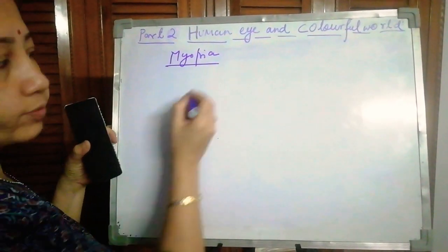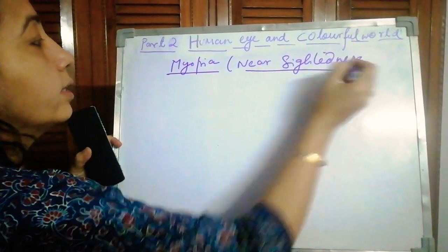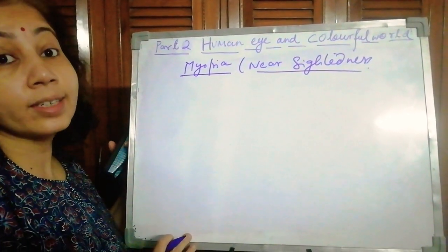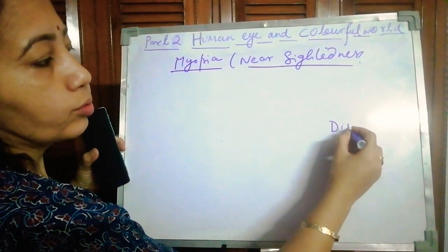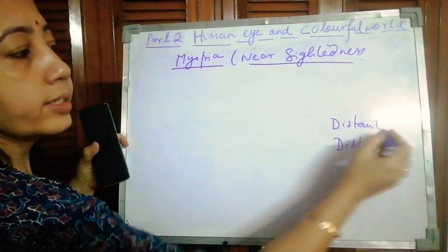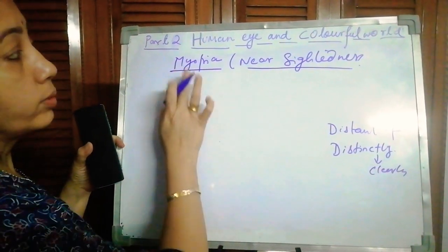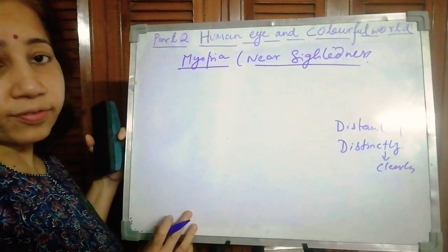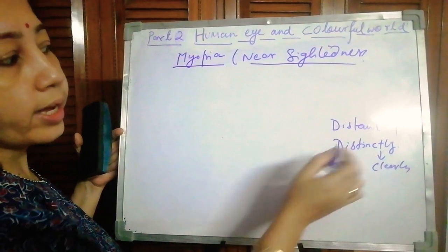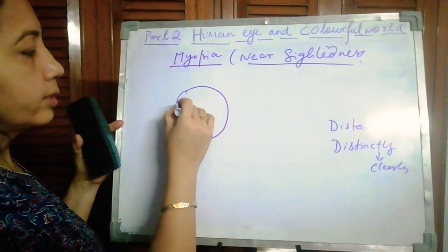Myopia is a defect which is also called near-sightedness. In this defect, a person can see near objects properly but is not able to see far objects clearly. Note these two words: 'distant' means far, and 'distinctly' means clearly. So the definition is: myopia is a defect in which a person can see near objects clearly but is not able to see distant objects distinctly.